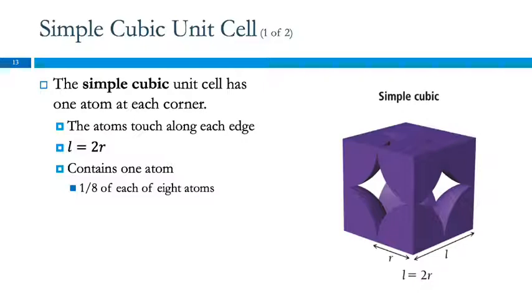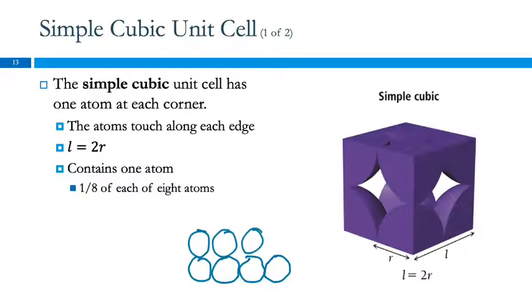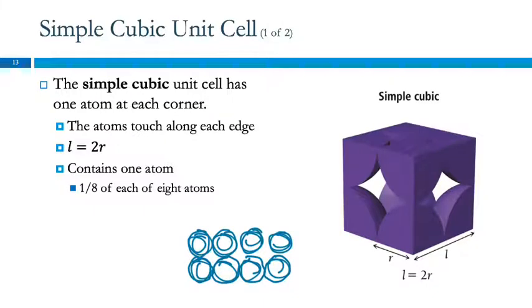This is the one cell I want you to understand — the others are kind of weird, but if you understand this one, the others will make sense. If we were packing oranges in a box, the oranges on the bottom layer would line up like this, and then the next layer would go right on top of these. That's what gives this type of cubic unit cell, where this atom is directly above that atom. It is not the most efficient way to pack things.